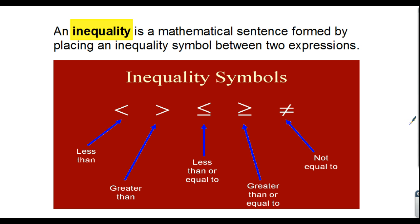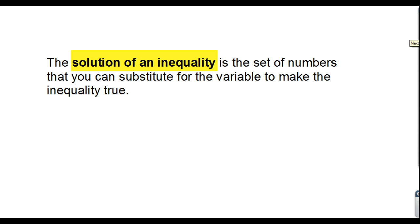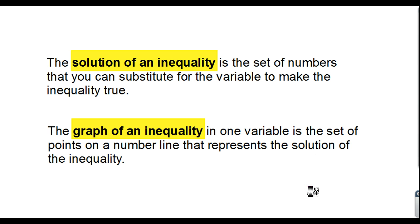I would hope that you write the definition down, and then also write down each of these symbols — you might want to pause before I move on. There's going to be a set of numbers that you can substitute in for a variable to make an inequality true. Remember, a variable is a number — it's either unknown or a changeable thing that represents an idea or a situation. We also have the graph of an inequality, where we show our answers on a number line, because sometimes it's easier to explain using a number line.